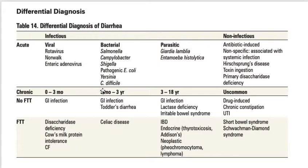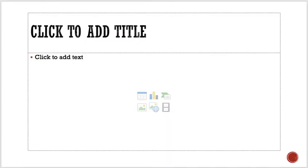Other uncommon causes of diarrhea include endocrinal causes like thyrotoxicosis, neoplastic causes like phaeochromocytoma, short bowel syndrome, and Shwachman-Diamond syndrome. These are not very common so we will not discuss them in detail.